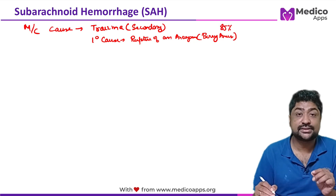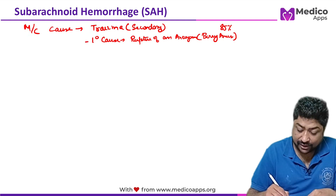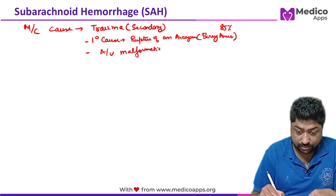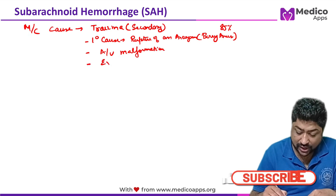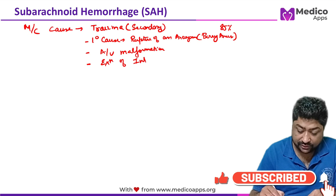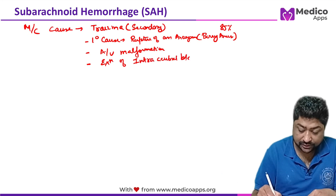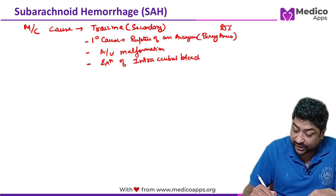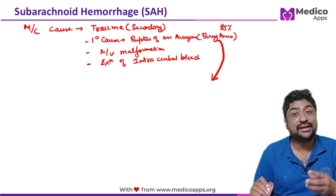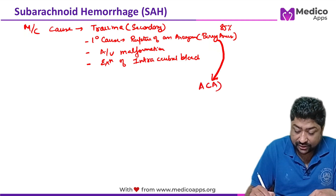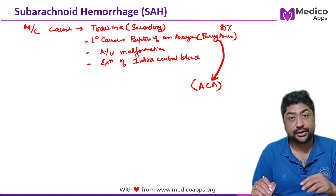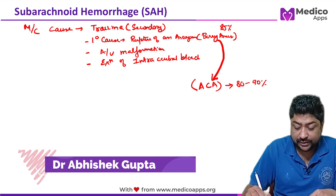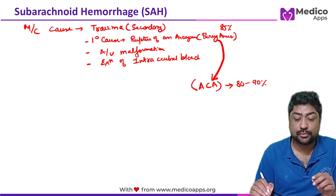Other primary causes include AV malformations and extension of intracerebral bleed. Regarding the most common site for berry aneurysm — the anterior communicating artery is the most common site, accounting for almost 80–90% of cases.